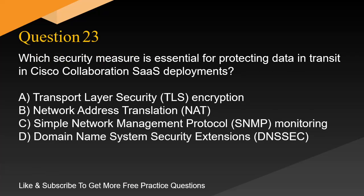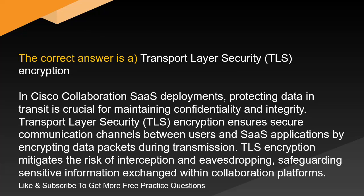Question 23. Which security measure is essential for protecting data in transit in Cisco collaboration SaaS deployments? A. Transport Layer Security (TLS) encryption. B. Network Address Translation (NAT). C. Simple Network Management Protocol (SNMP) monitoring. D. Domain Name System Security Extensions (DNSSEC). The correct answer is A. Transport Layer Security (TLS) encryption. In Cisco collaboration SaaS deployments, protecting data in transit is crucial for maintaining confidentiality and integrity. TLS encryption ensures secure communication channels between users and SaaS applications by encrypting data packets during transmission, mitigating the risk of interception and eavesdropping, and safeguarding sensitive information exchanged within collaboration platforms.